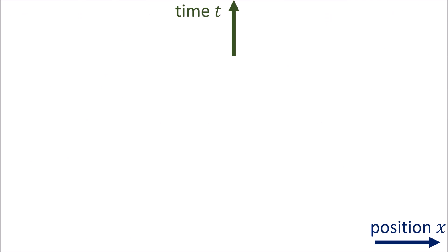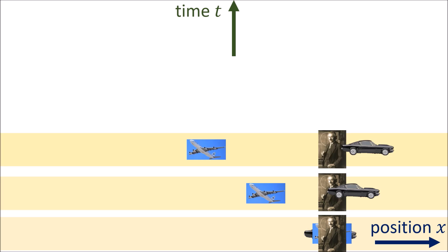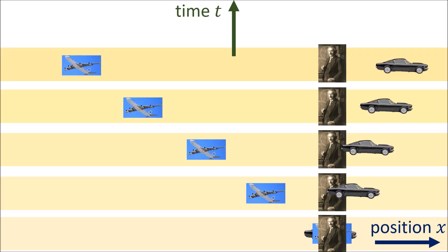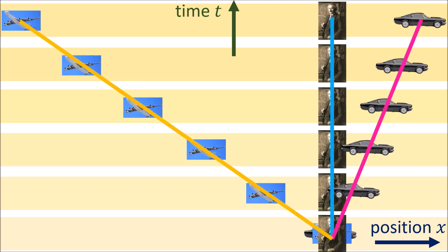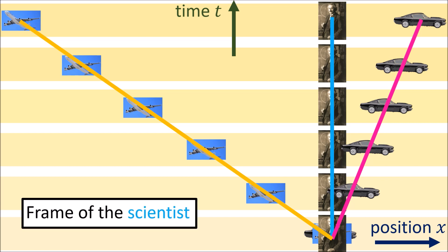Here's another way to think about motion in different reference frames in spacetime diagrams. Let's say that as time passes by, at each second we take a photograph of all the objects in space. As the seconds go by, we end up with a series of photographs, or time slices, that can help us trace out the world lines of all the different moving objects. We can see here that the scientist has a vertical world line, so this spacetime diagram represents the frame of reference of the scientist, since he is standing still.